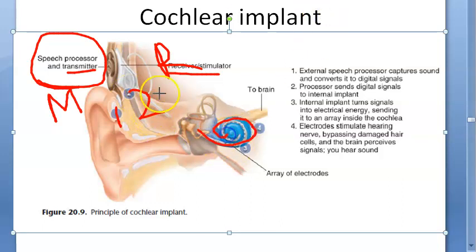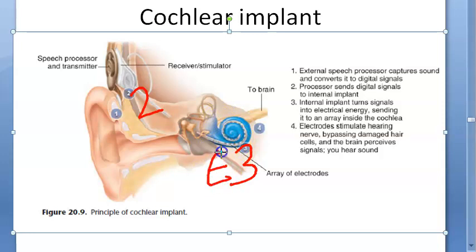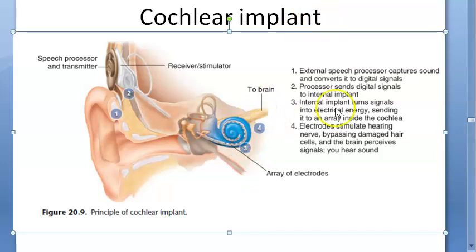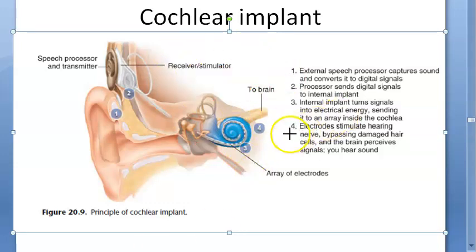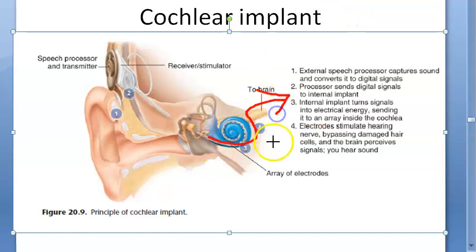The signals are coming to the implant. The internal implant turns signals into electrical energy, converting everything to electrical energy and sending it to an array inside the cochlea. The key word here is electrode array. These electrodes will stimulate the hearing nerve - the cochlear nerve. Whatever hair cells are damaged in your cochlea, the signal will be sent directly to the nerve by these electrodes.